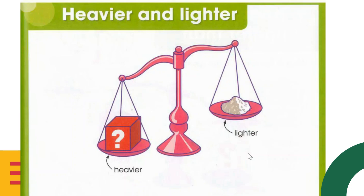Heavier means the thing that is heavy, and lighter means the thing that is very light. You calculate them by their weights. For example, if I talk about your backpack and one book — if you take the whole backpack, your backpack will be heavier than the one book, because your backpack has more books in it, and the one book compared to your backpack is lighter.